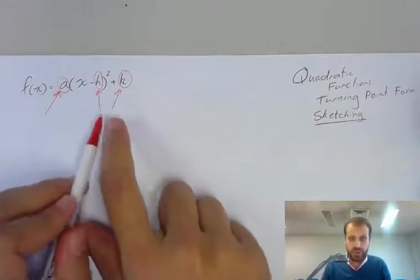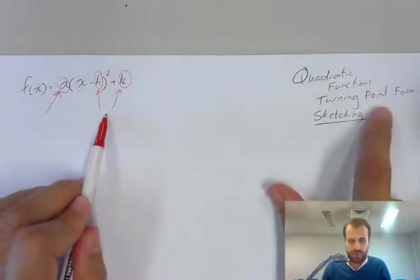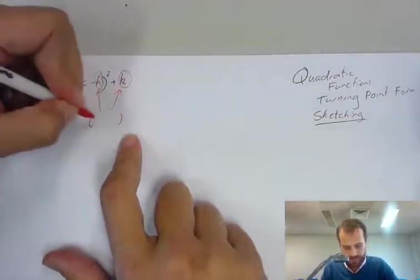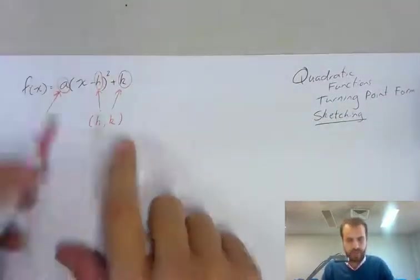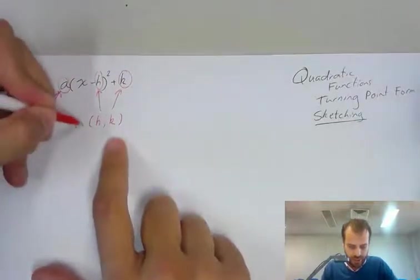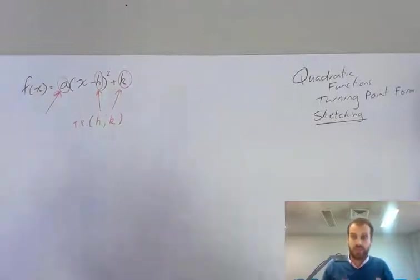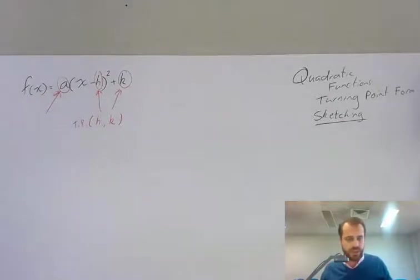Now we'll deal with the turning point because it's the turning point form first. h and k make up the turning point. So there's our turning point, tp, the turning point. Now remember that this negative means that when you see this in an equation, it's going to do the opposite of what you expect. But we'll go through an example so you see what I mean by that.